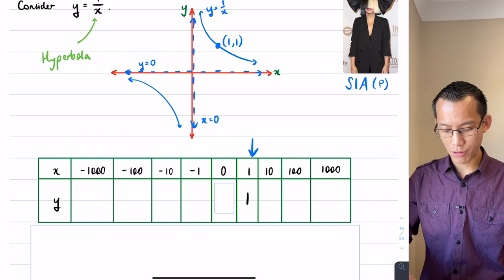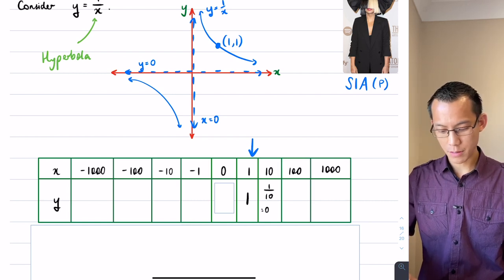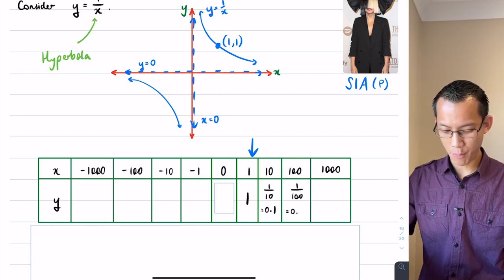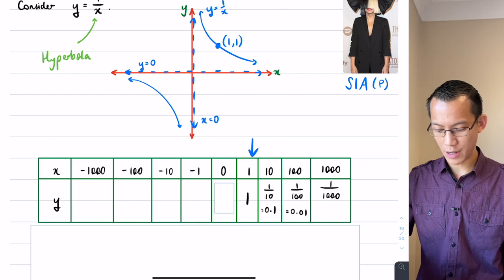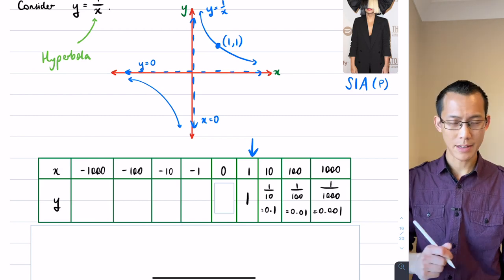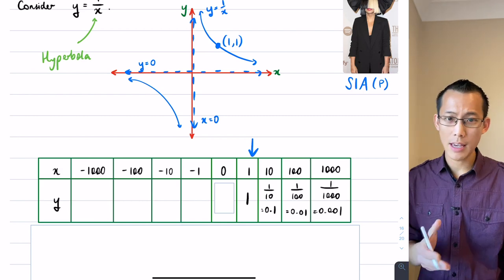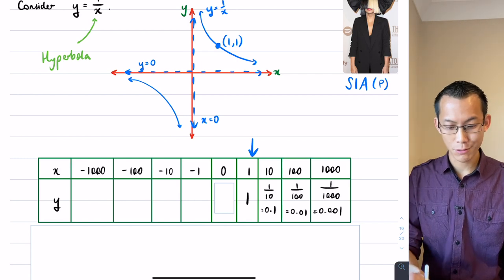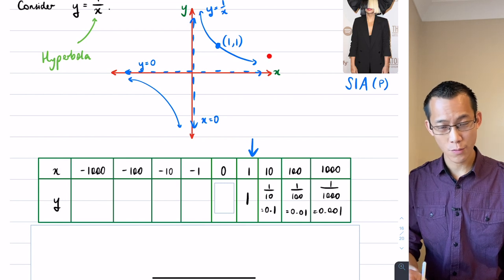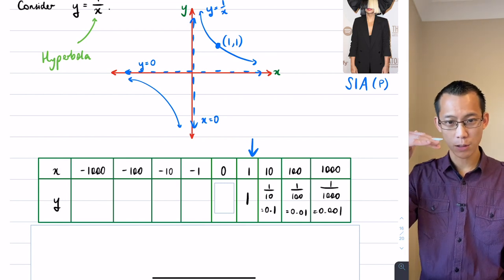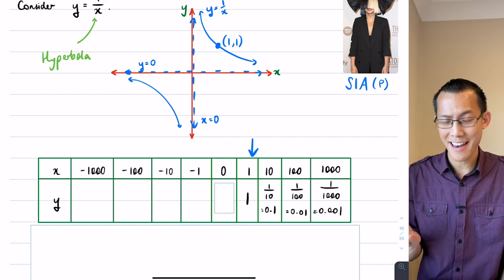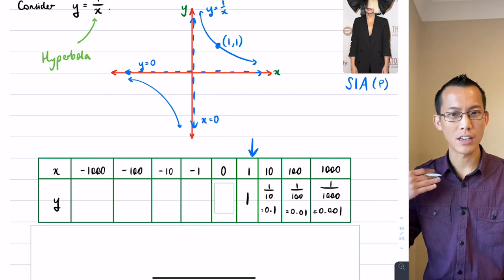What does the graph tell you, and what do your numbers tell you? Well, as you substitute the x values in you get 1 over 10, which you could write as 0.1, then 1 over 100 which is 0.01, and then at the end of my table I get 1 over 1000, so that's 0.001. So what you see in the numbers is what you would predict based on looking at the graph: as you go to the right, as x values increase, you get closer and closer to the x-axis — to the horizontal asymptote.